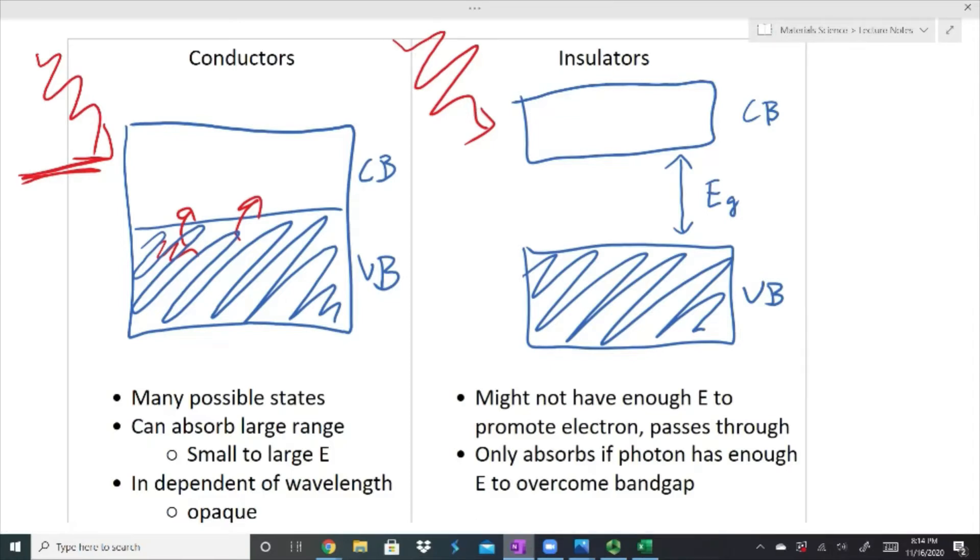Some electrons might get promoted up here, but very easily this photon gets absorbed by the material. In some cases, it could also reflect as well. For the case of an insulator or semiconductor, a photon comes in, but photons have different wavelengths depending on their energy. There might not be enough energy to promote an electron. Let's say that there is only this much energy that the photon is bringing. There isn't enough energy to have it interact with the electrons to promote an electron into that conduction band.